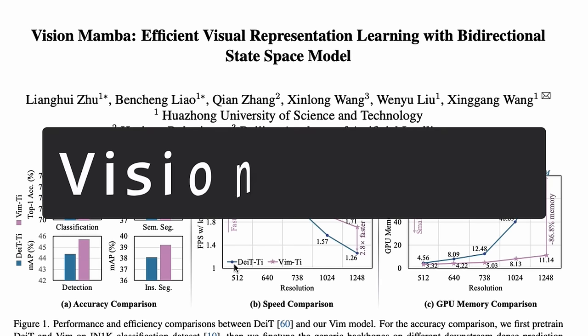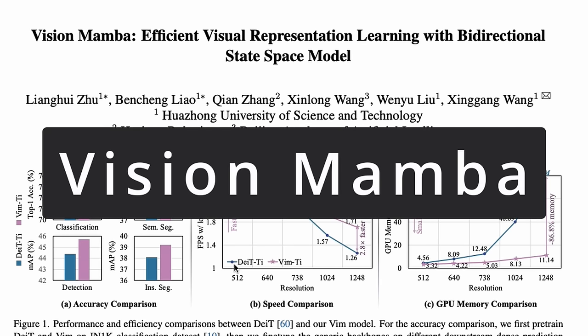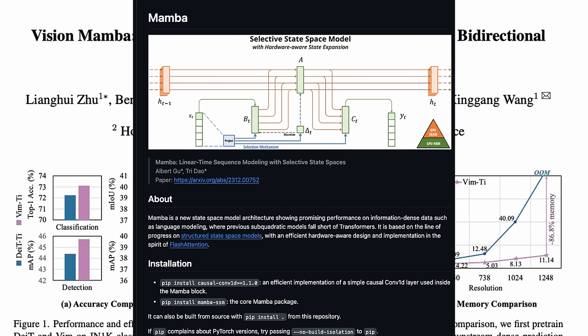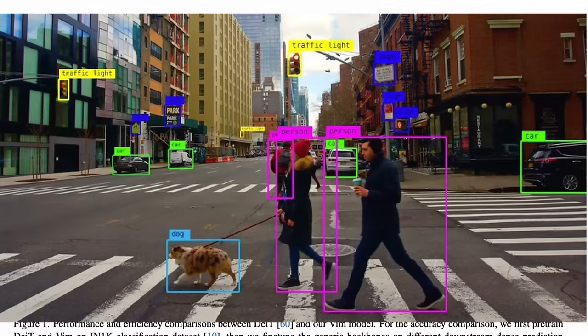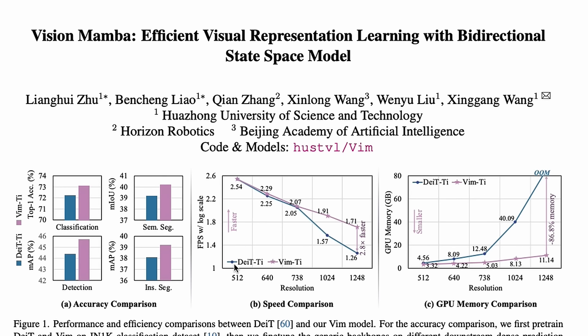We now have Vision Mamba. If you're not familiar with Mamba, it is supposedly an alternative neural network architecture to transformers. We have seen different versions of Mamba in the past couple of weeks, and now we have Vision Mamba, which means Mamba would work for vision data, not just text data. This is quite exciting for the future.